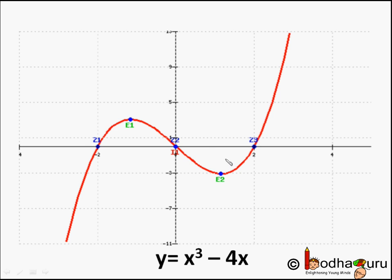Look, the graph intersected the x-axis three times at point minus 2 comma 0, 0 comma 0 and 2 comma 0. So, this cubic polynomial x cube minus 4x has three zeros and they are minus 2, 0 and plus 2. Does every cubic polynomial have three zeros?